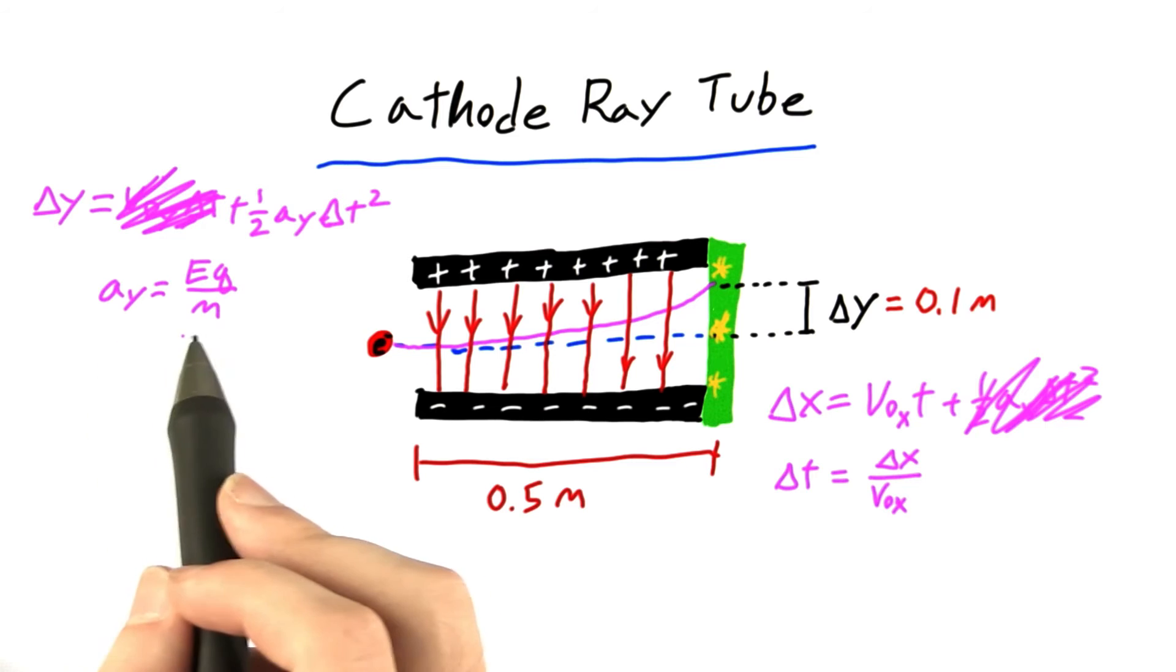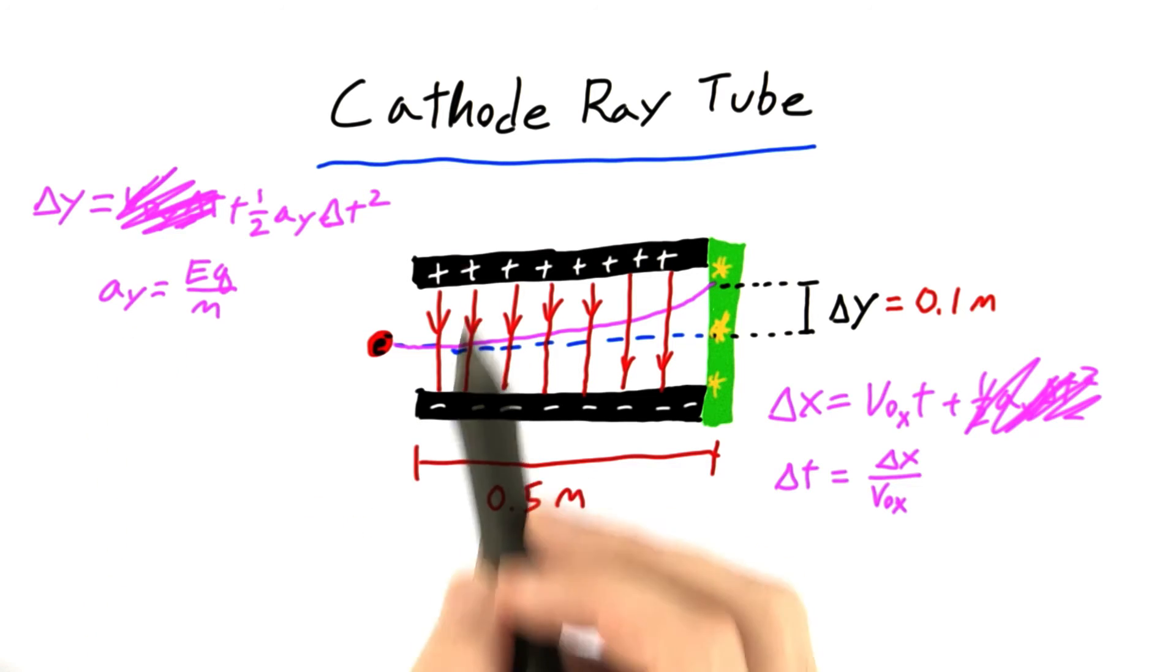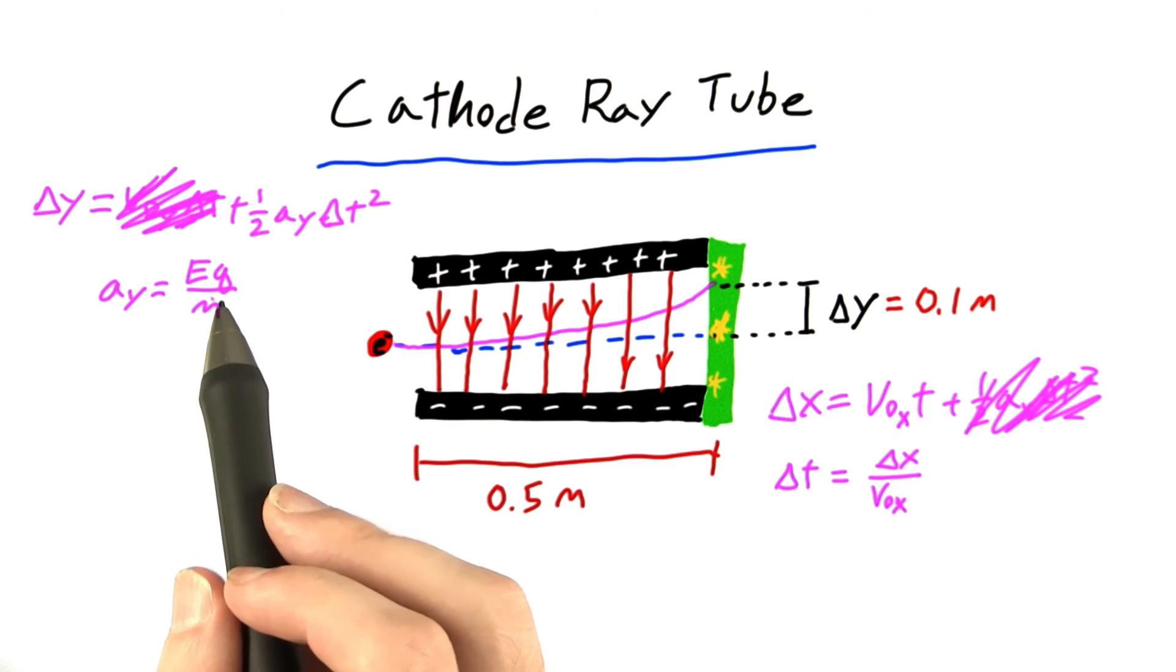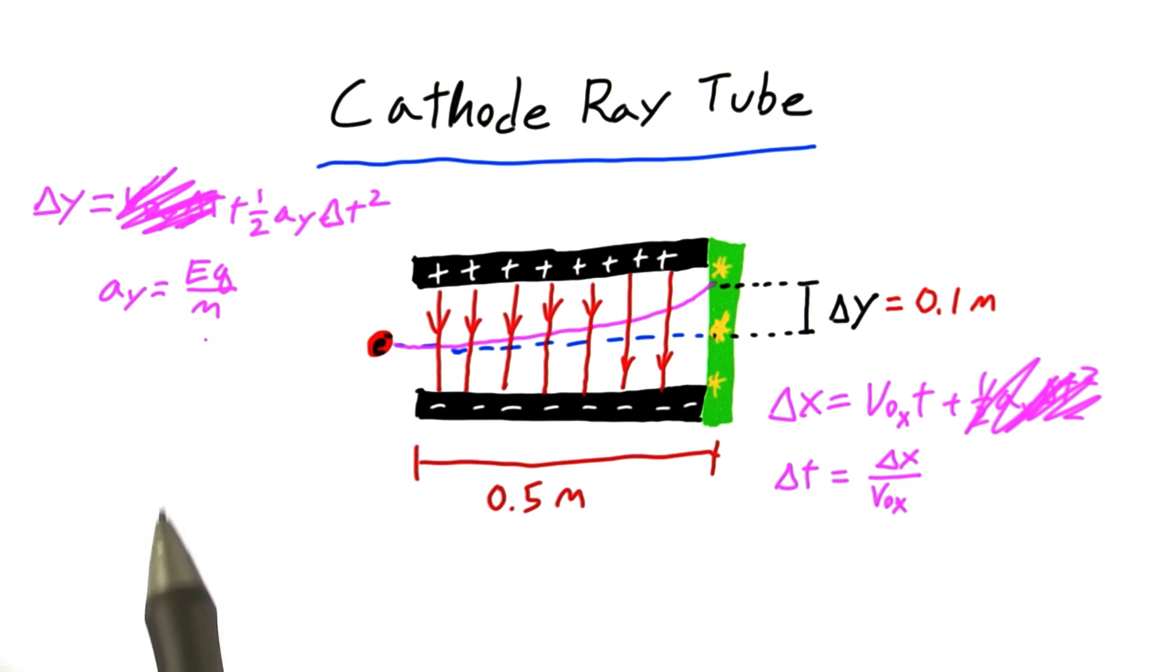And we know from our earlier parallel plate problems that the acceleration along the direction of the field is going to be equal to the strength of the field e times the charge on the electron divided by the electron's mass.